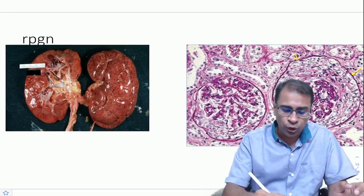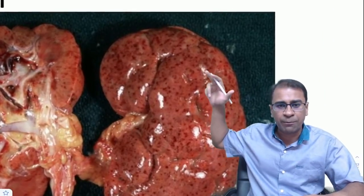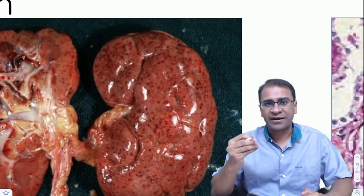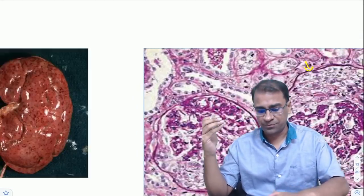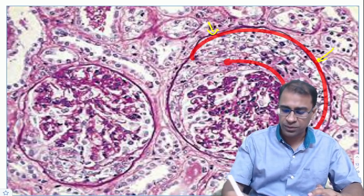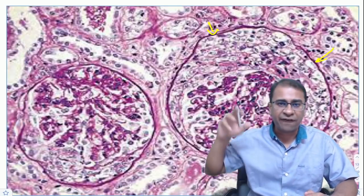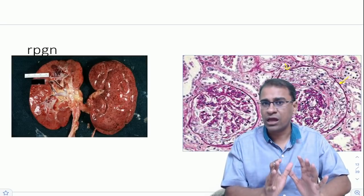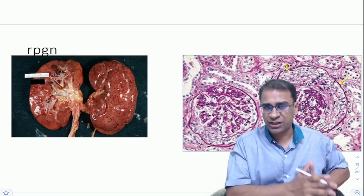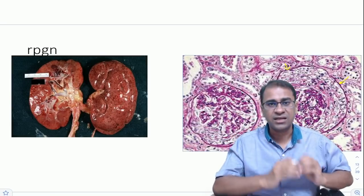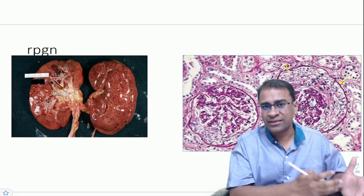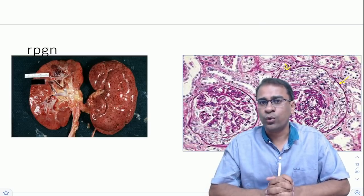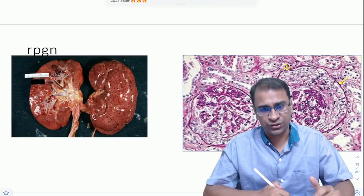Second is RPGN. Look at the flea-bitten kidneys with multiple hemorrhagic spots. This is also seen in polyarteritis nodosa, subacute bacterial endocarditis, and malignant hypertension. The hallmark microscopy finding is a crescent. RPGN is classified as type 1 (anti-GBM disease, Goodpasture's), type 2 (immune complex diseases), and type 3 (pauci-immune, including granulomatosis with polyangiitis, microscopic polyangiitis, and Churg-Strauss syndrome).